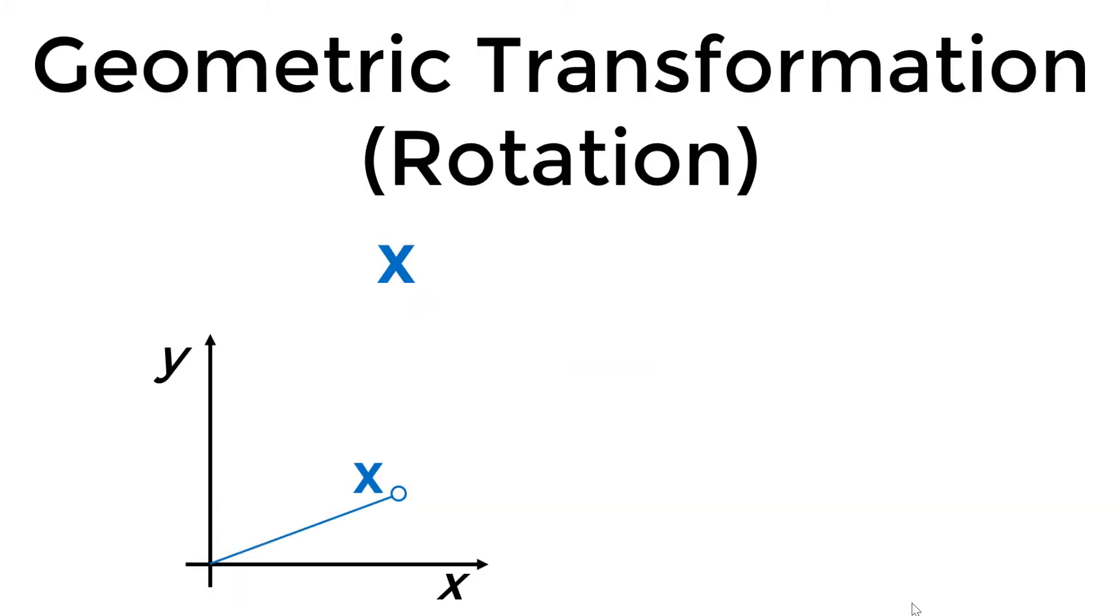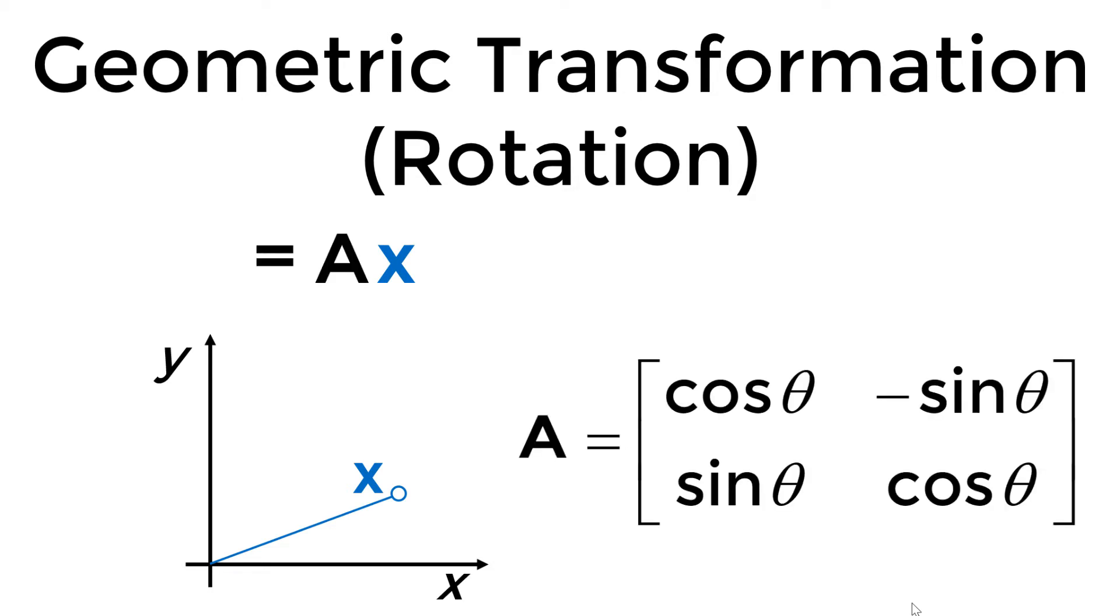If you have a column vector x given in 2D plane y versus x, the coordinate of the vector x can be rotated in a counter-clockwise direction with the theta degree through the linear transformation. The transformation matrix A for the counter-clockwise rotation needs cosine theta in the diagonal elements and sine theta in the off-diagonal elements.